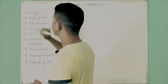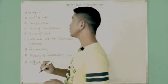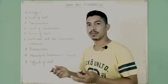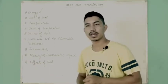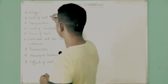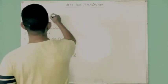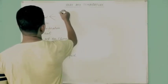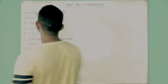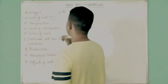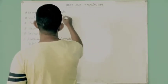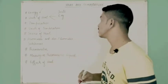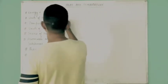Since heat is a form of energy, and all physical quantities can be measured, there are different units to measure heat. Some of them are joule, erg, and the most common unit used to measure heat is calorie.